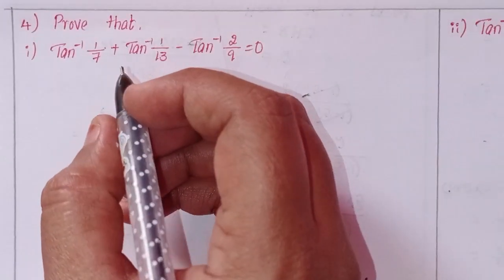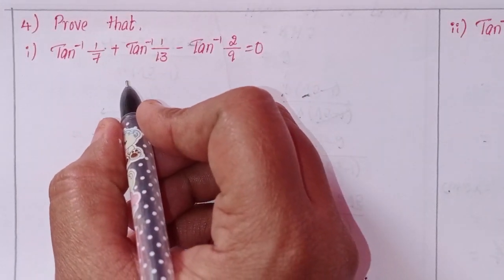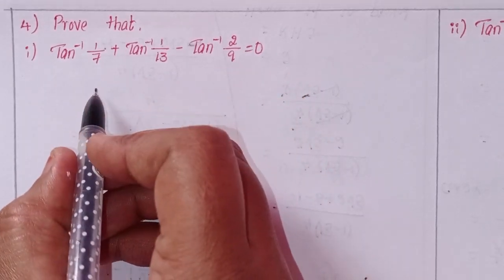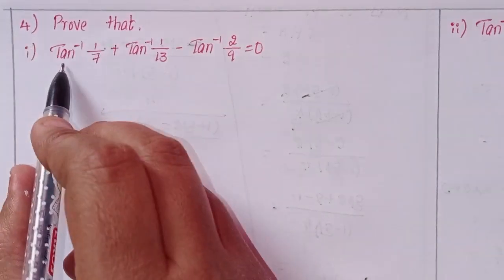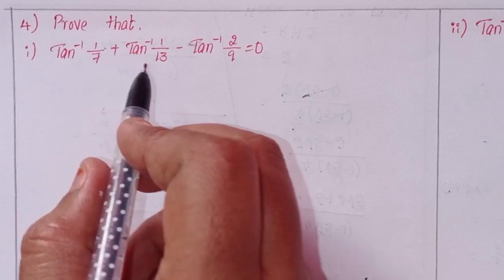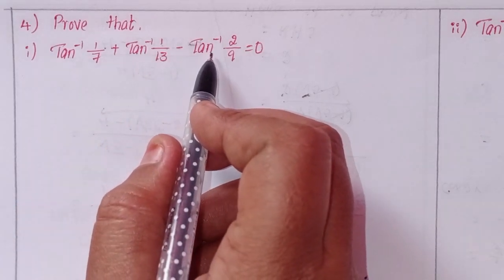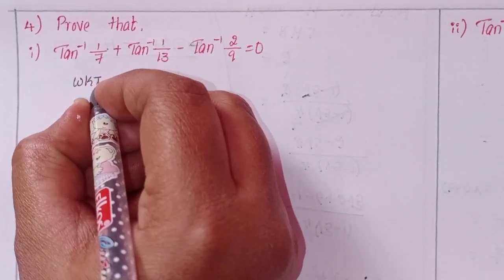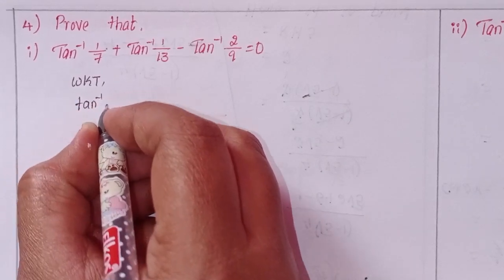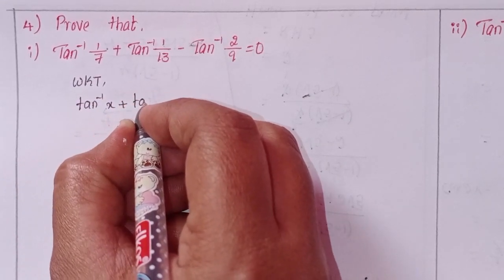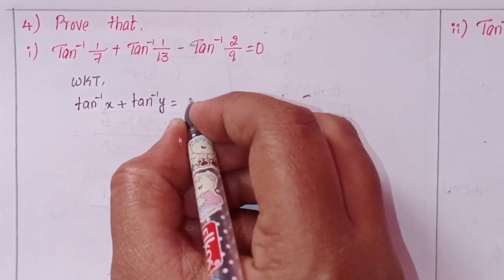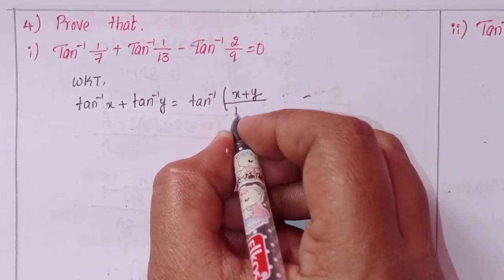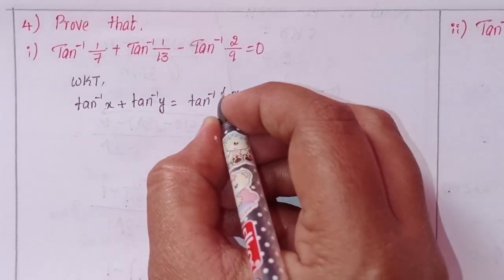Hi viewers, this is Shaheen and welcome to my channel. Today we will discuss Intermediate First Year, Chapter 8, Inverse Trigonometric Functions, Exercise 8a, second Roman, fourth problem. We know that the formula: tan inverse x plus tan inverse y equals tan inverse of x plus y by 1 minus xy.